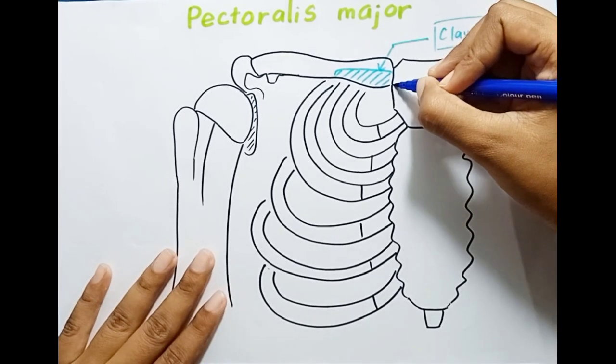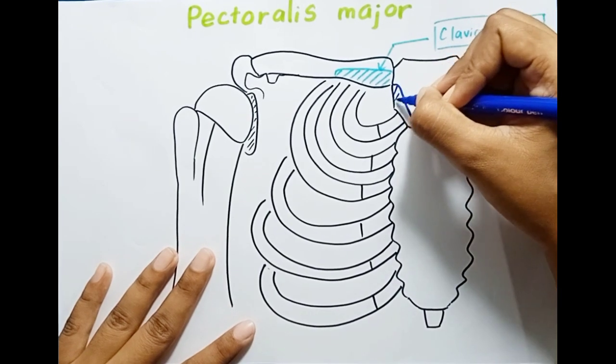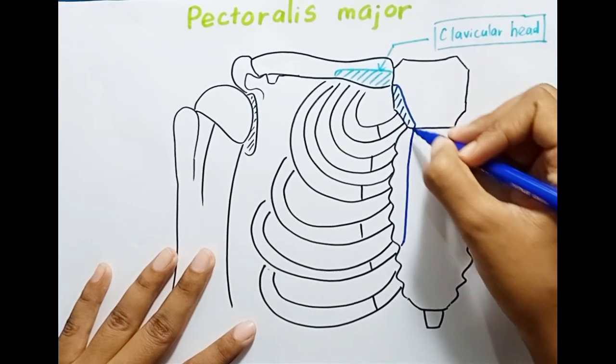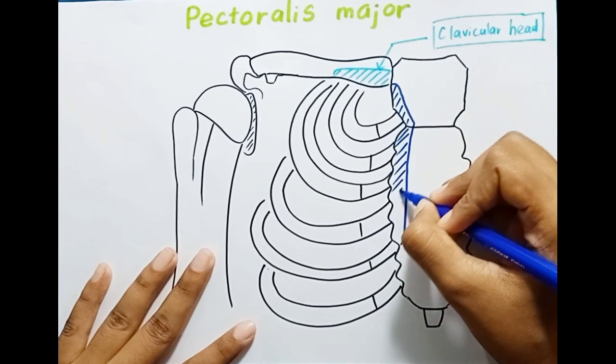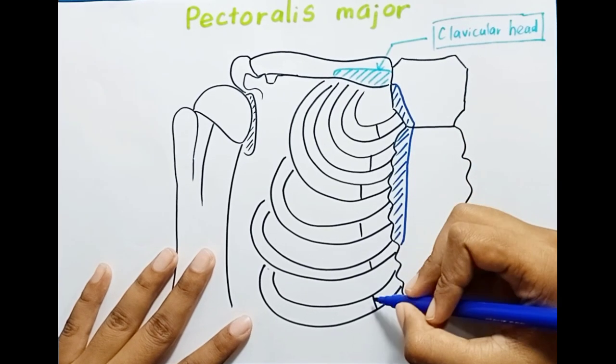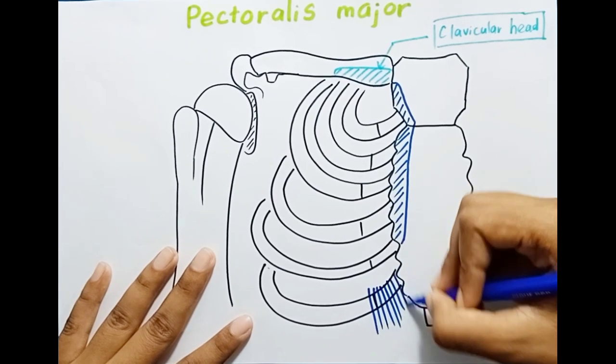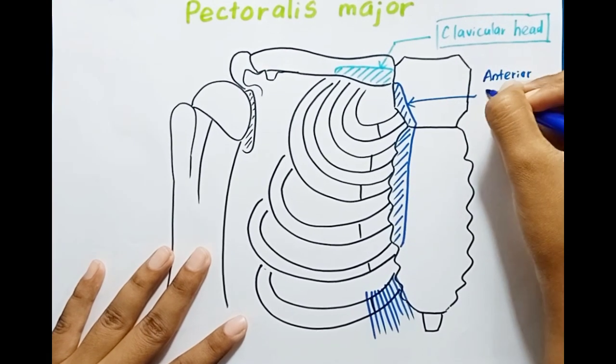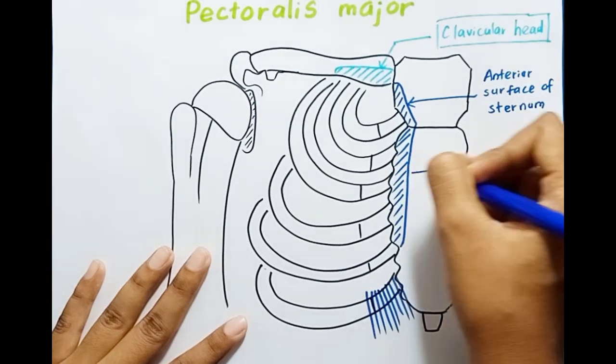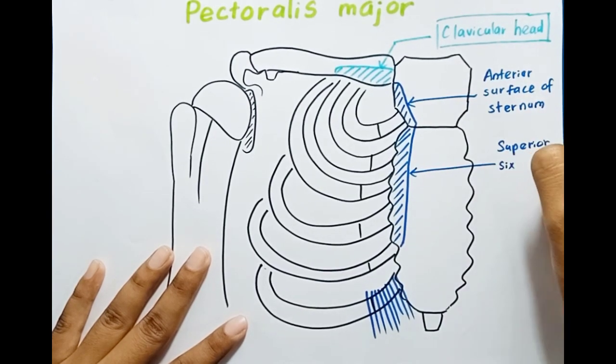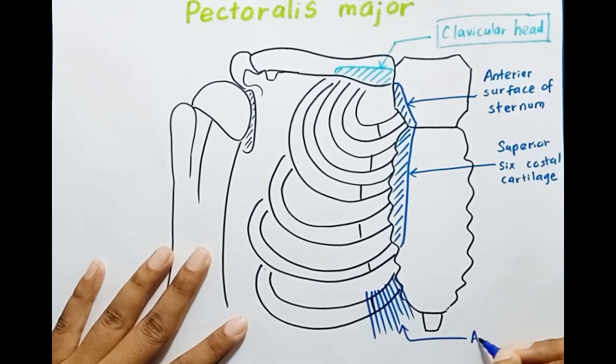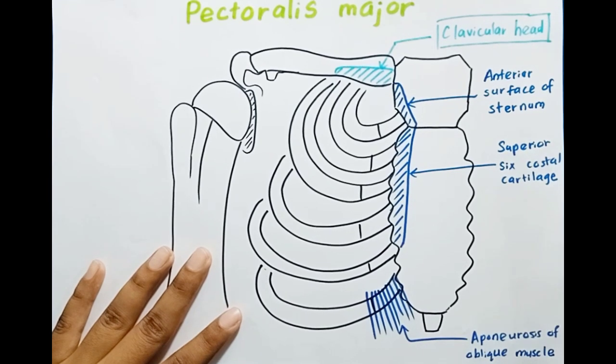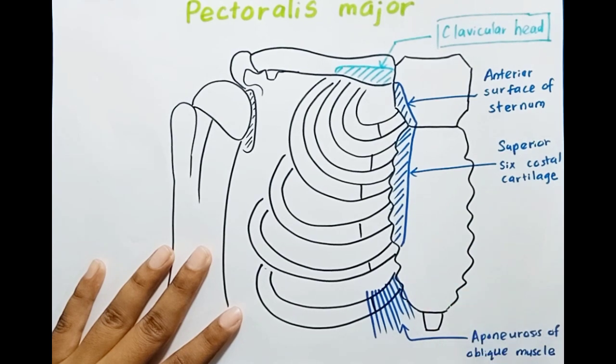Here you can see the anterior surface of the sternum, that means the front surface, the superior six costal cartilages, and the aponeurosis of the oblique muscle. So these three are known as the sternocostal head.